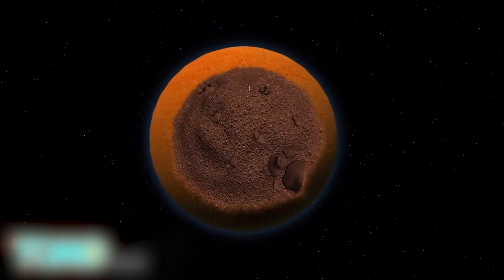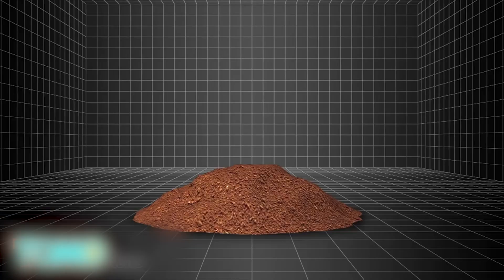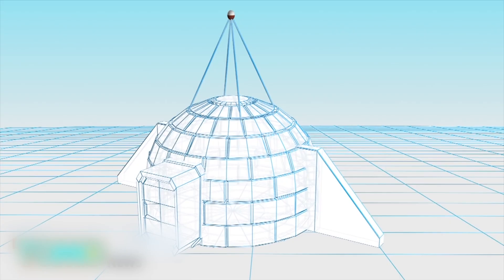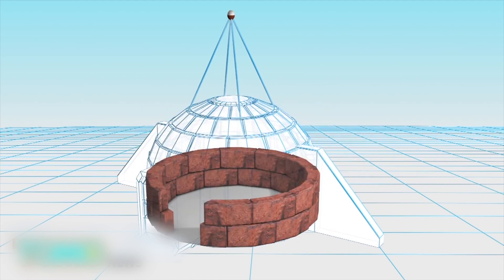The house would be constructed with Martian soil. The soil would be microwaved until it forms a brick. The bricks would be used to build the walls of an igloo-shaped dome, which would be around 10 feet thick.